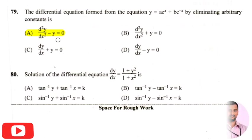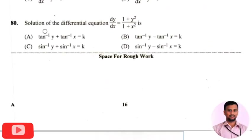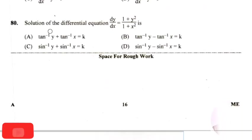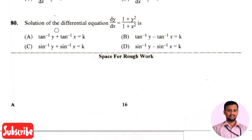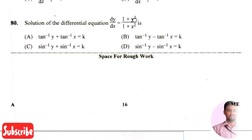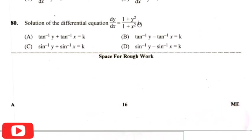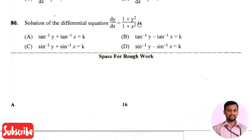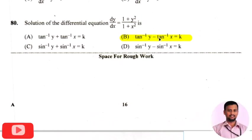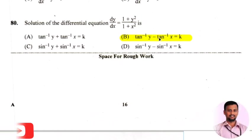The last question in this applied mathematics section: the solution of the differential equation dy/dx equals (1 plus y squared) divided by (1 plus x squared) is? The right answer is option 2, that is tan inverse y minus tan inverse x equals k.